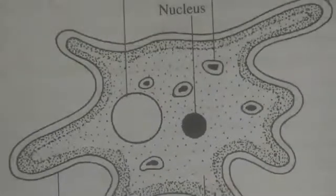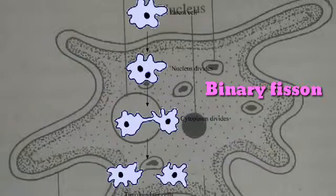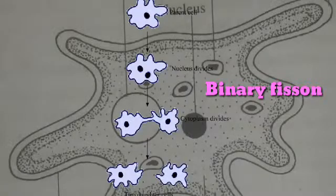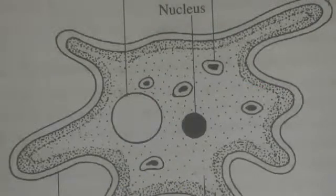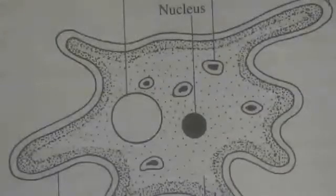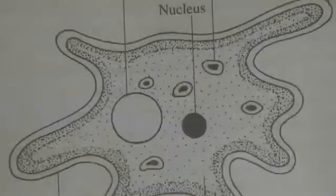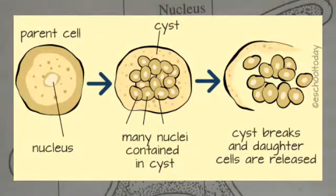Amoeba reproduces asexually by binary fission and multiple fission or sporulation. Binary fission occurs under favorable conditions and multiple fission under unfavorable conditions. Binary fission involves an altered and abbreviated mitotic division called cryptomitosis. Multiple fission is the division of the parent body into several daughter amoebae; during this, the nucleus undergoes repeated division to form several daughter nuclei.